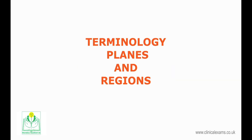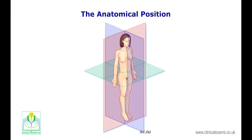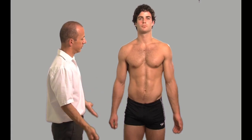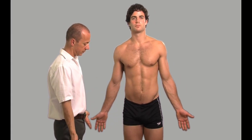General Anatomy: Terminology, planes and regions. When describing the position of body structures, you must bear in mind that this is always in relation to the anatomical position. The subject stands erect with arms by their side and palms facing forwards.